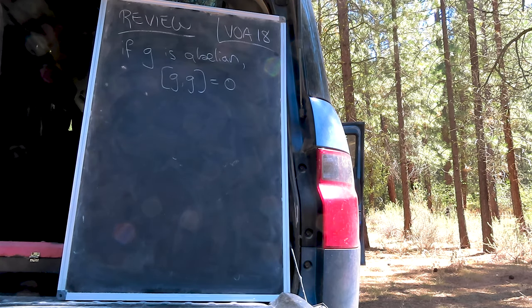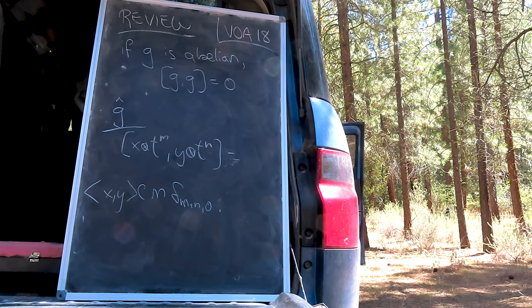If G is an abelian Lie algebra, then the brackets associated with its affine extension reduced to the central term.